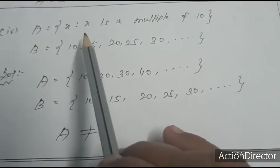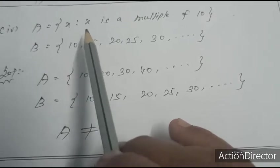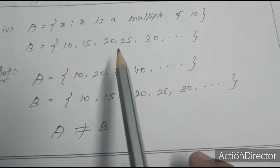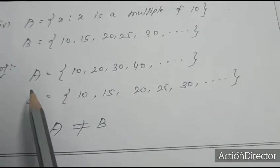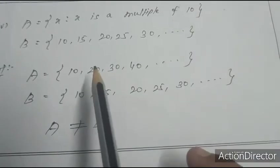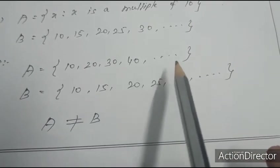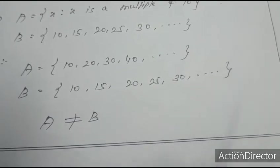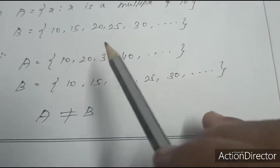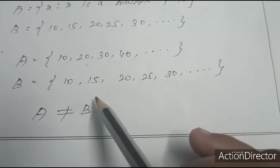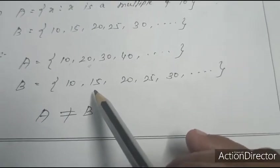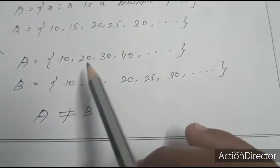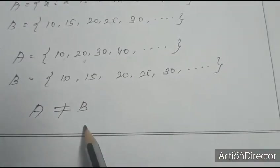Fourth: A = {x : x is a multiple of 10} and B = {10, 15, 20, 25, 30, ...}. A = {10, 20, 30, 40, ...}. Checking: 10 is OK, but 20 does not belong to B directly — wait, checking B: 15 does not belong to A. Therefore A ≠ B.